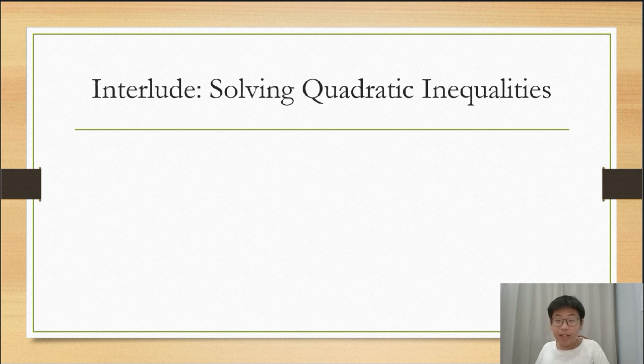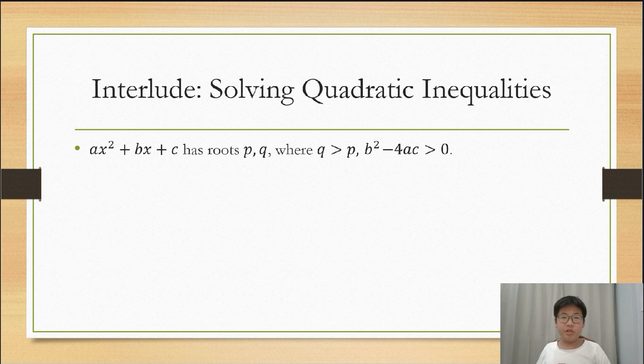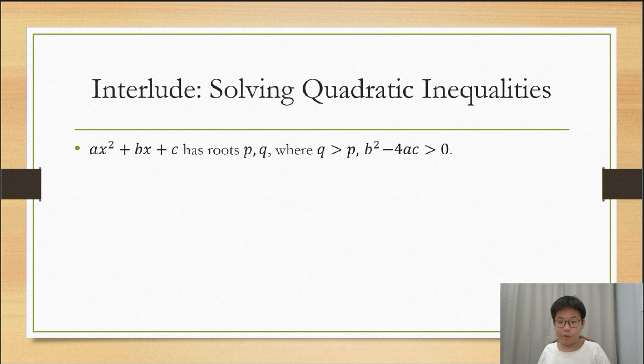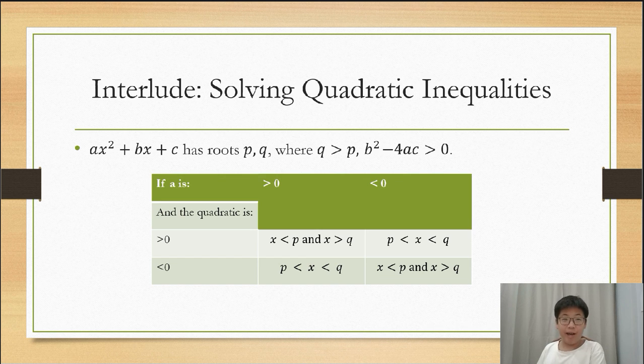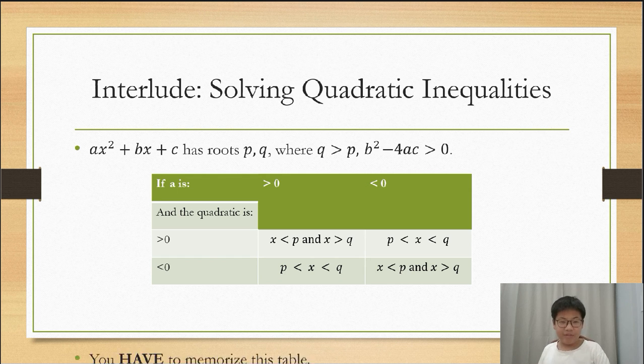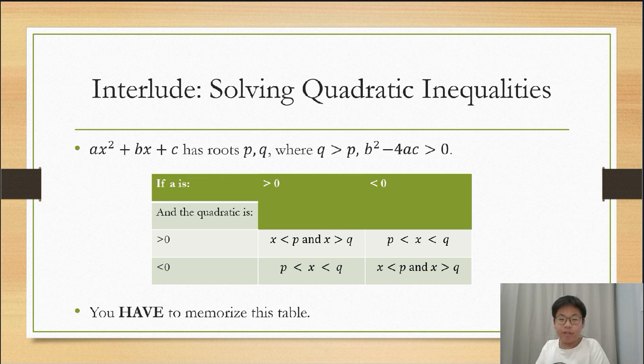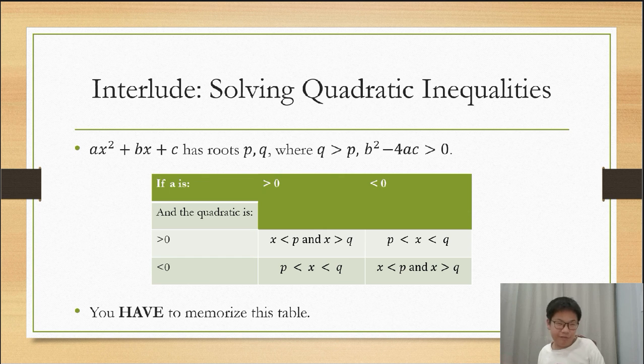Now for solving quadratic inequalities. Let our quadratic ax² plus bx plus c have roots p and q, where q is greater than p, and b² minus 4ac is greater than 0. You'll see why b² minus 4ac is so important. You'll see this table. For this exam, you have to memorize this table. You basically have to memorize every single formula in this video to help you excel on this exam.